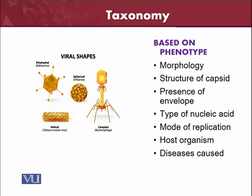Phenotype criteria include morphology — the structure of the virus, what kind of structure it has — which may be on the basis of the capsid or the non-capsid morphology. As you can see in the slide, different structures correspond to different viruses. Similarly, the presence of the envelope is a criterion: some viruses have an envelope and some do not, so different names are given on this basis. Another criterion is the type of nucleic acid — DNA or RNA — and whether the DNA is single-stranded or the RNA is double-stranded.